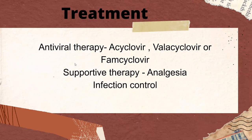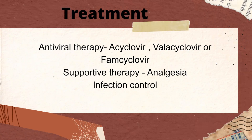Treatment involves antiviral therapy — you can give acyclovir, valacyclovir, or famciclovir. We also need to give supportive therapy; since pain is a key symptom, we provide analgesia following the WHO pain ladder: starting with paracetamol, escalating to NSAIDs if needed, and then to opioids if those do not help.